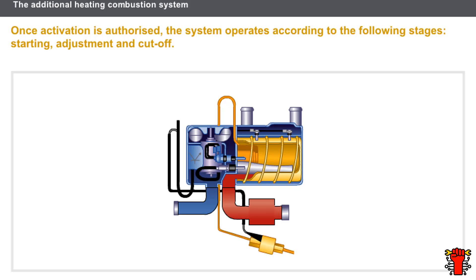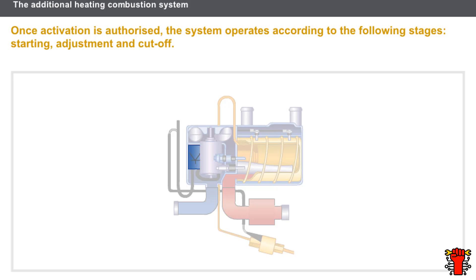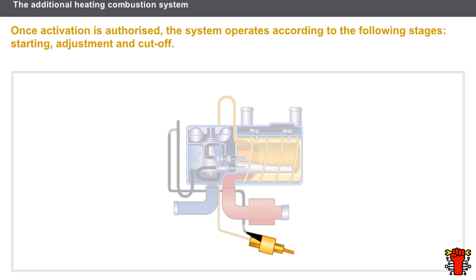Once activation is authorized, the system operates according to the following stages: starting, adjustment, and cutoff. Different components manage heater starting: the control device located in the boiler, the air blower turbine positioned in the boiler comprising a fan and a direct current motor, the incandescent plug which is a heating resistor located in the boiler, the metering pump located outside the boiler which is a variable flow electric fuel pump, and the flame detector which is a positive temperature coefficient type thermistor located in the boiler.